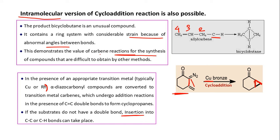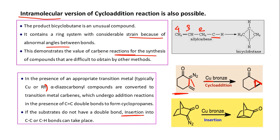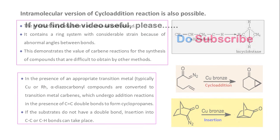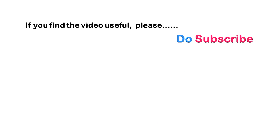Just for preview: if you take the same type of substrate but without a C=C double bond, then under the same conditions instead of getting a cycloaddition product you will get an insertion product — insertion into a C-C or C-H bond. How we get this insertion product will be discussed in the next video, Part 6, which covers the insertion mechanism. I hope you now have a good idea about cycloaddition reactions. More reactions will be discussed in the upcoming videos. Thank you for your time.